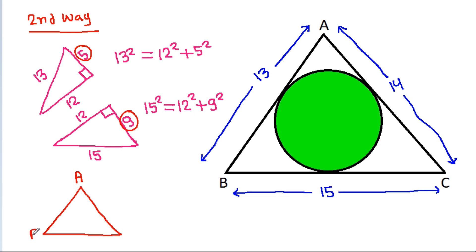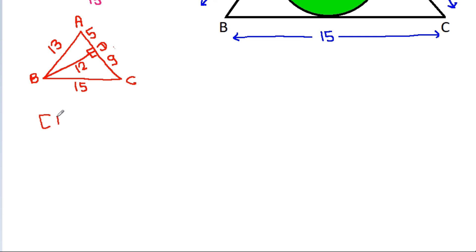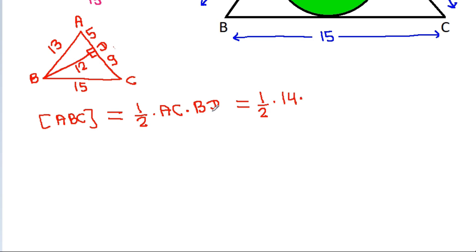So in triangle ABC, we have AB is 13, AC is 14, and BC is 15. If we draw a perpendicular BD, then BD will be 12. And the area of ABC equals (1/2) times BC times BD, which is (1/2) times 15 times 12, but more directly (1/2) times AC which is 14 times BD which is 12, giving 84.